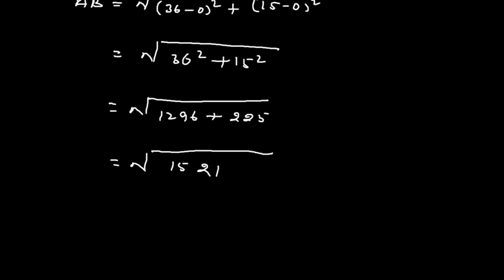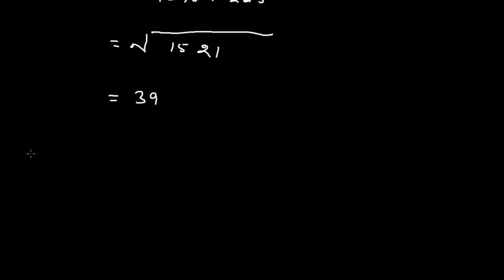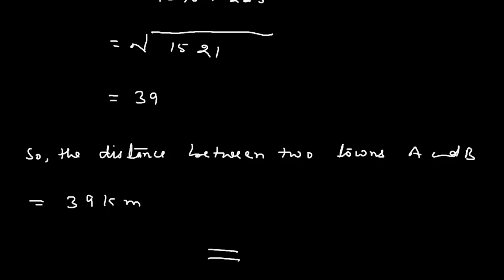The square root of 1521 equals 39. So the distance between towns A and B is 39 kilometers. This is the solution to the question. Thank you.